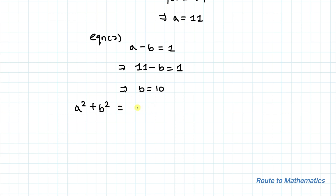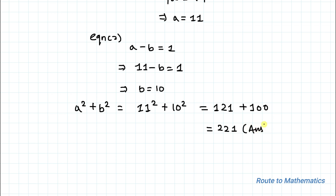From above, a² + b² = 11² + 10² = 121 + 100 = 221. That is our answer. I hope you understood the solution. Thanks for watching — please subscribe to my channel and click the bell icon for more interesting videos!